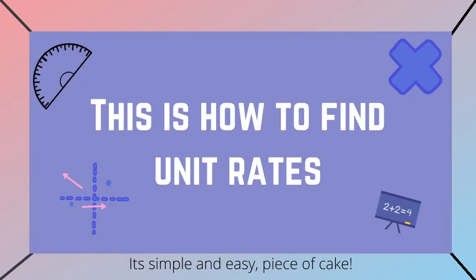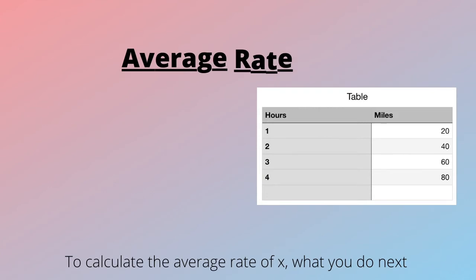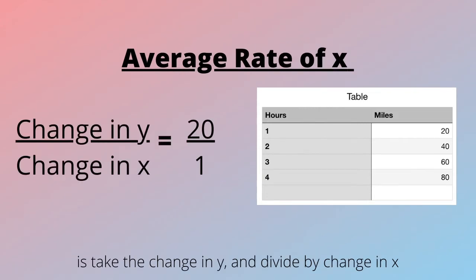This is how to find unit rates. It's simple and easy, piece of cake. To calculate the average rate of x, what you do is take the change in y and divide by the change in x.